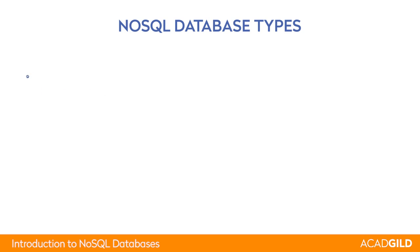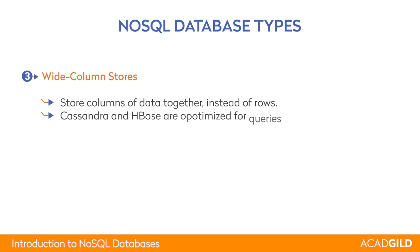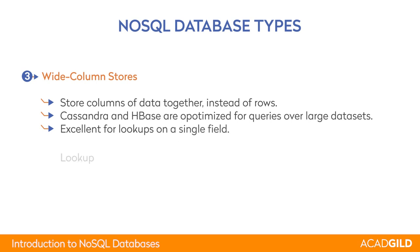Another NoSQL type is Wide Column Stores. In this type of database, we combine or group multiple columns together to create a column family. One advantage is that if you want data from only a single column family, the other column families are not scanned. Cassandra and HBase are good examples, and they are excellent for performing lookups and range scans across a particular range of columns.